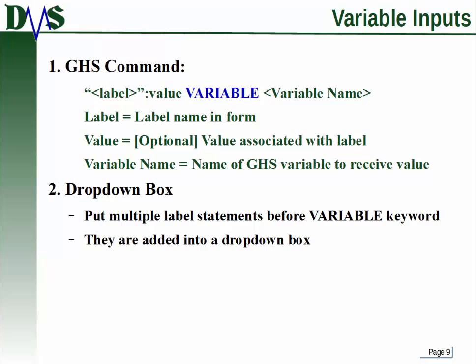Another common input is a variable input. This lets the user enter some value into a text box, and that value will be assigned to a variable that you have already created. You start off with specifying a label, optionally add a value for that label, then use the keyword 'variable' followed by the variable name — the GHS variable that will receive the value the user enters. If you put multiple label statements before the variable keyword, they combine to create a single drop-down box.